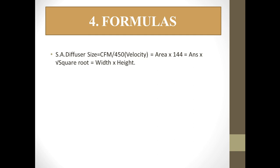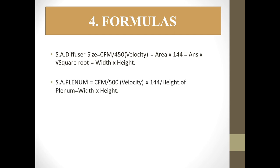To calculate the supply air diffuser size: Supply Diffuser Size = CFM / 450, where 450 is the standard velocity. Calculate the area, multiply by 144, then take the square root of the result to get the dimension. For a supply diffuser, both sides have the same width, so taking the square root gives you the width × height directly.